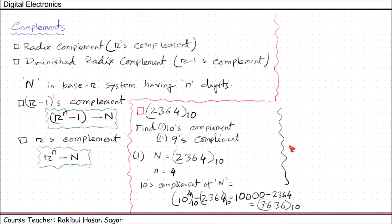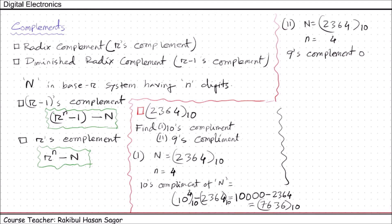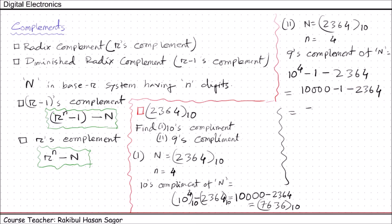Now let's solve for the 9's complement. Here again, N equals 2364 in base 10 system and small n equals 4. So we can write: 9's complement of N equals 10 to the power 4 minus 1, minus 2364, all in base 10 system, which equals 7635. So the 9's complement of 2364 is 7635.